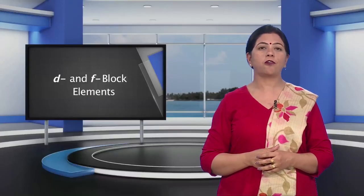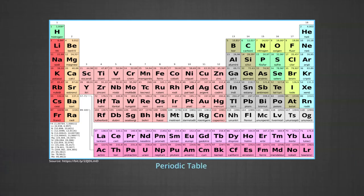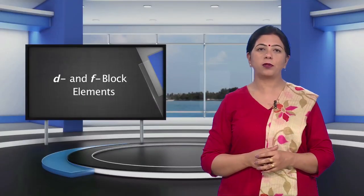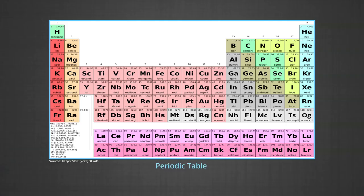Here you can see a picture of the periodic table. Elements from group 3 to 12 represent D block elements or transition metals. You can see the picture of the D block of the periodic table contains elements from group 3 to 12, representing the D block elements or the transition metals. The two series at the bottom are F block elements, also known as inner transition metals.